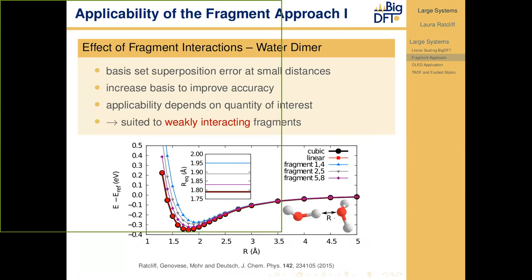The question is when is it appropriate to use this fragment approach? As an example of when we shouldn't use it: in the case of a water dimer at very long distances the fragment approach works perfectly with essentially zero error, because the molecules are not interacting. At very short distances we start to have a rather large error from basis set superposition error. The size of this error depends on the quantity of interest — for total energies the error tends to be larger; for the density of states it tends to be less important.